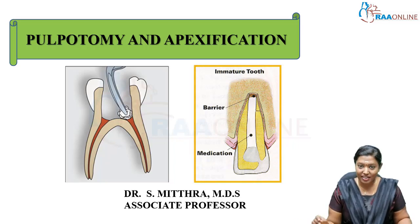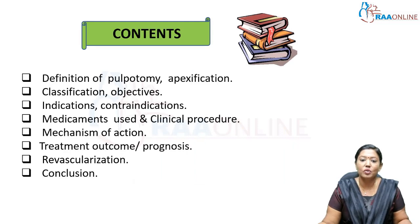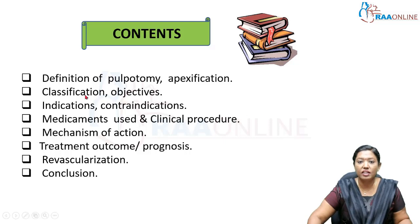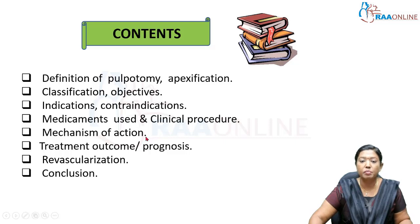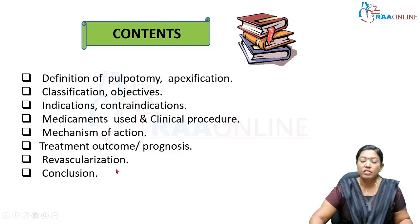The contents of today's class include the definition of pulpotomy and apexification, the classification and objectives of pulpotomy and apexification, indications and contraindications for both, medicaments used, and the clinical procedure. We will also cover the mechanism of hard tissue barrier formation by calcium hydroxide and MTA (mineral trioxide aggregate), treatment outcome and prognosis, revascularization as a short note topic, and finally the conclusion.